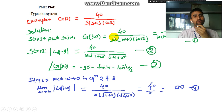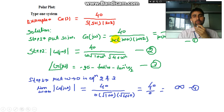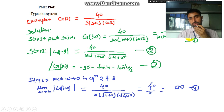G(jω) = 40 divided by jω(jω+1)(jω+2). It is a Type 1 system because there is an individual s term whose power is one. After substituting s = jω, this may be written as 40 divided by jω · (1 + jω) · (2 + jω).